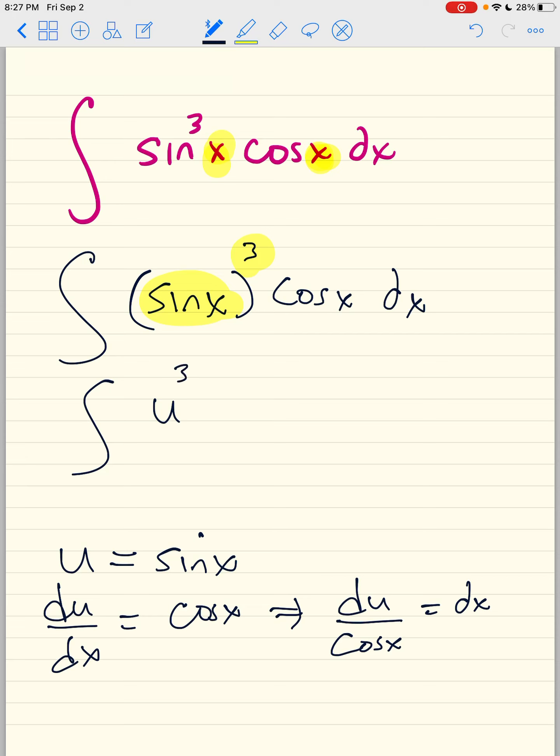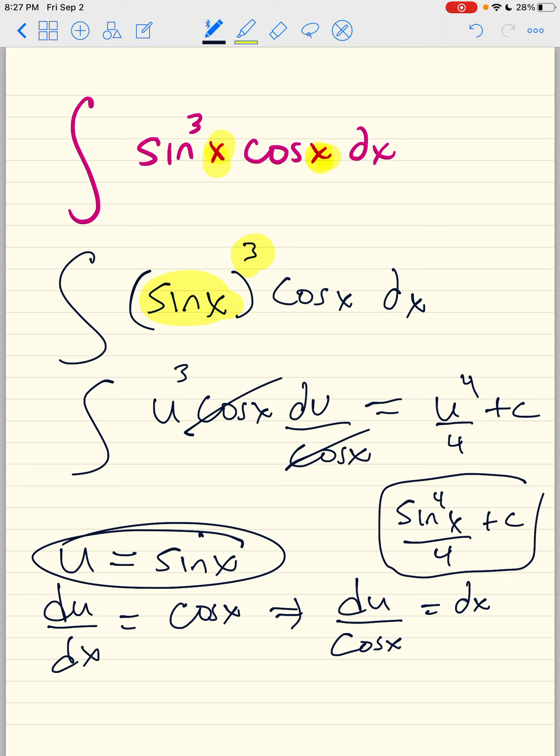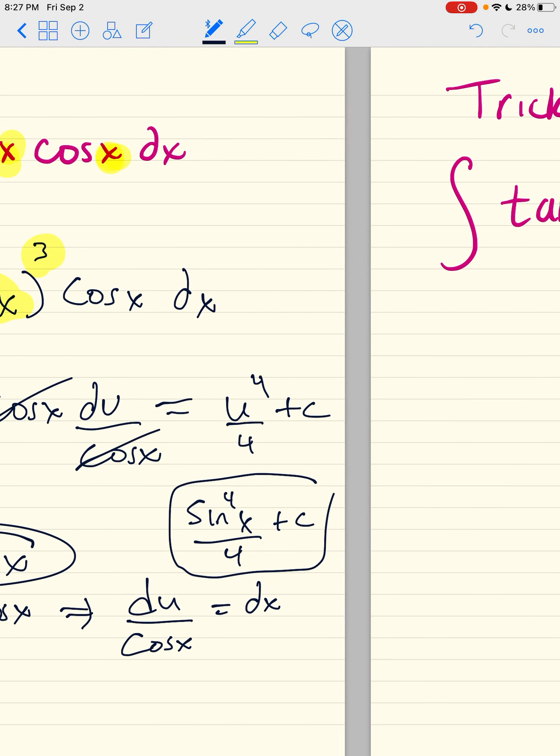You come here. That's your u to the third. Cosine x. dx is. Now you integrate. Get u to the fourth over 4 plus c. Who's u? That person. So it's sine. You must put the 4 here and not next to the x. That's it.